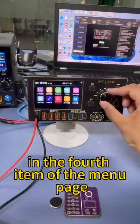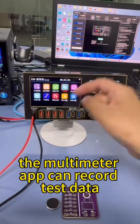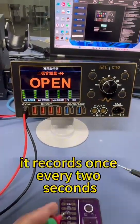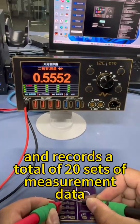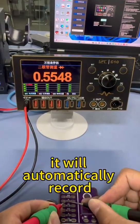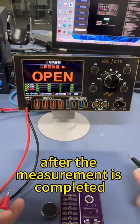In the fourth item of the menu page, the multimeter APP can record test data. It records once every two seconds and records a total of 20 sets of measurement data. It will automatically record after the measurement is completed.